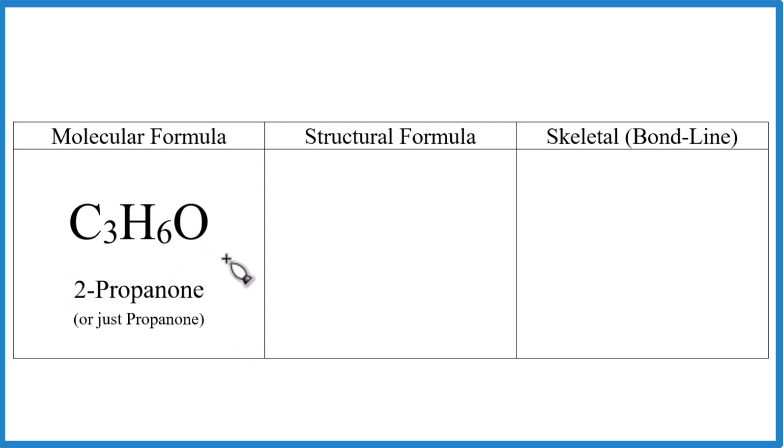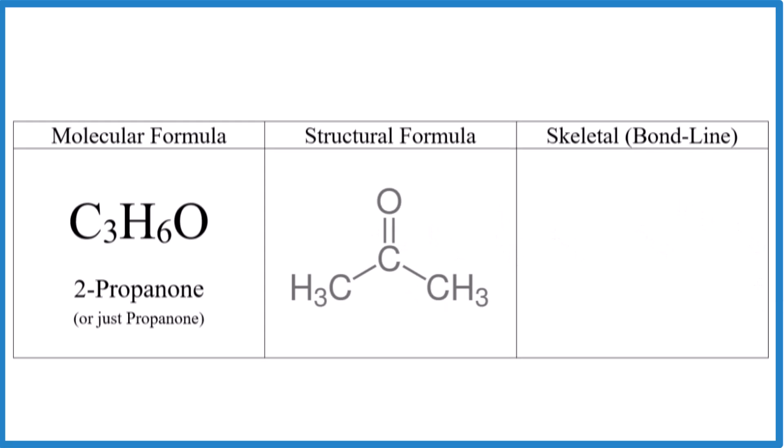So let's do this. Let's put our three carbons here with a double bond oxygen on the second carbon. And note each carbon has four bonds. One, two, three, four for this carbon. One, then the three hydrogens. One, then the three hydrogens. So we know this is all set up correctly.